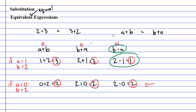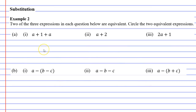As we go through example two, we're really looking for one expression which is not equivalent to the others. In example two, we are told that two of the three expressions are equivalent but one is not — we've got to figure out which one. Starting with question A, let's pick a equals one and substitute it into our three expressions. For our first expression, we get one plus one plus one, which equals three.